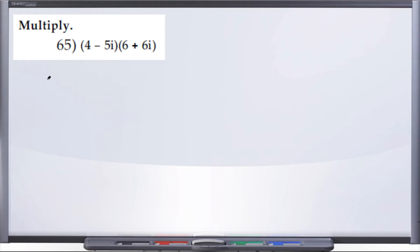All right, 65, they tell us to multiply, and they've given us 4 minus 5i times the quantity 6 plus 6i.